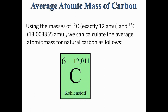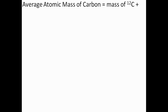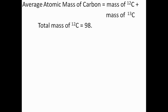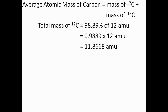Before calculating, let's check the actual value from the periodic table. Carbon has an atomic number of 6 and an atomic mass of 12.011. The average atomic mass of carbon equals the mass contribution of C12 plus the mass contribution of C13. The total mass contribution of C12 equals 98.89% of 12 AMU, which gives 11.8668 AMU.